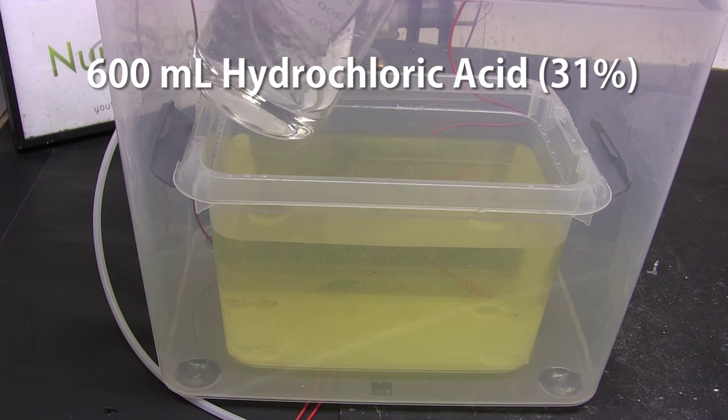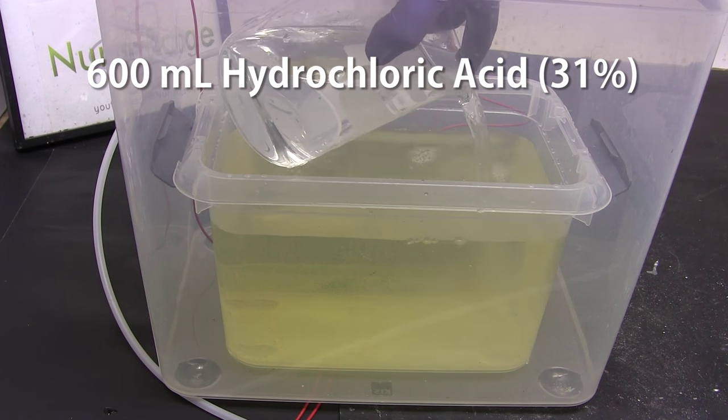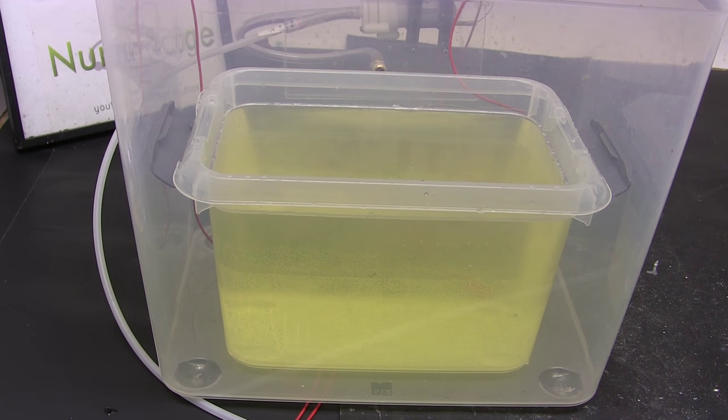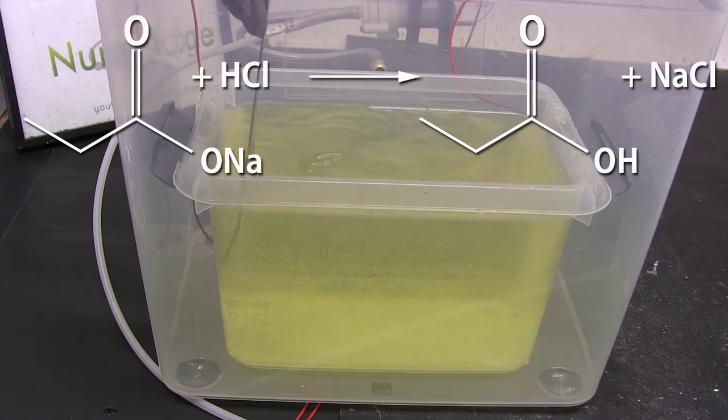Now to convert the sodium propionate into propionic acid we add 600 milliliters of 31% hydrochloric acid. This is a huge excess of hydrochloric acid and will ensure the reactions proceed forward.